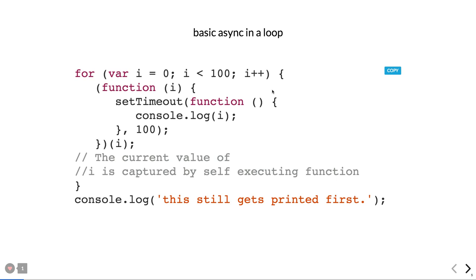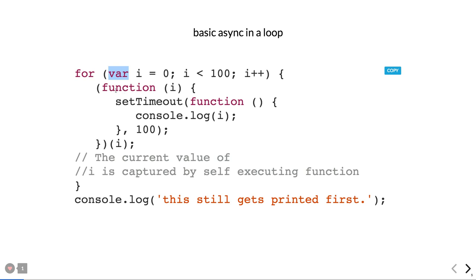A basic question in Node.js: a for loop running 100 times (synchronous) has a setTimeout (asynchronous) inside it. Without an IIFE block, it prints 100 one hundred times because the synchronous loop executes all 100 iterations before setTimeout runs, so it always gets the value 100. Adding an IIFE captures the scope of each iteration — or you can use 'let' so it is block-scoped — and you capture each value of i from 1 to 100.